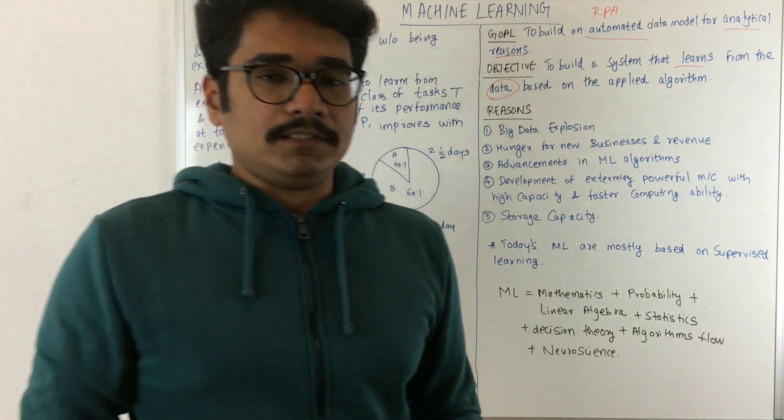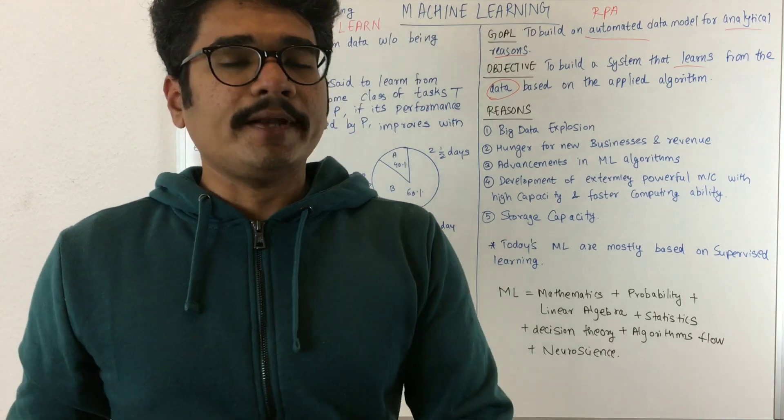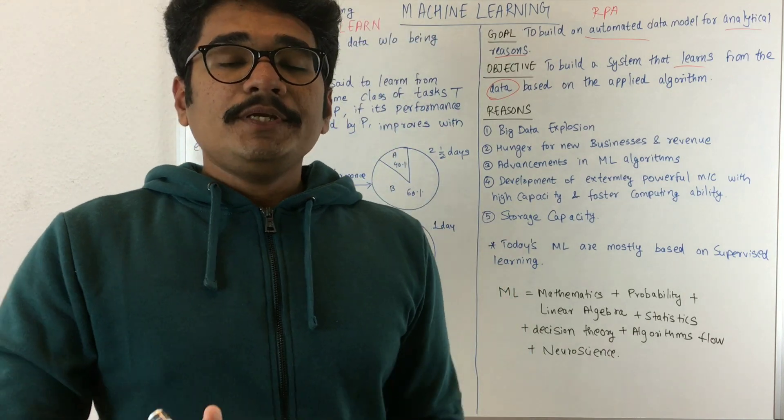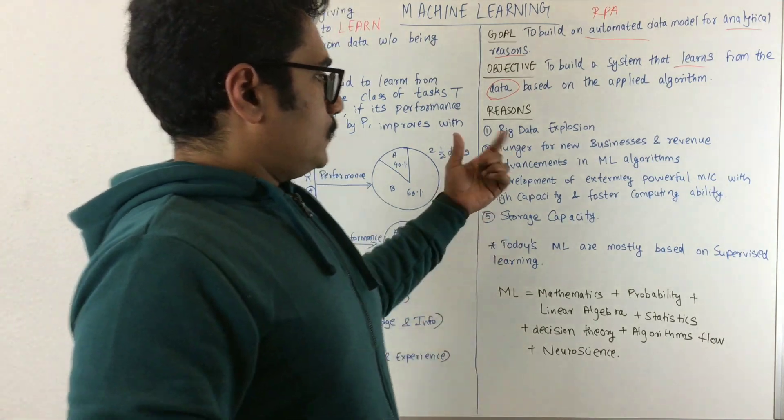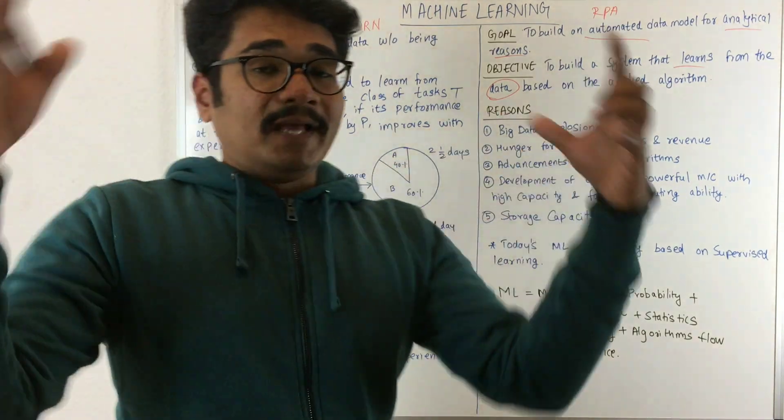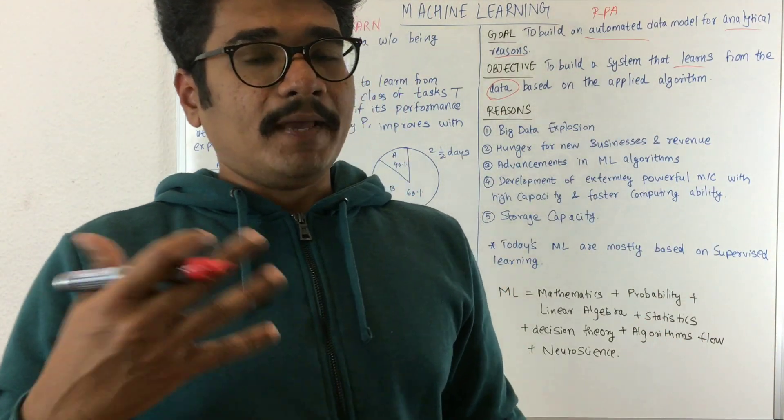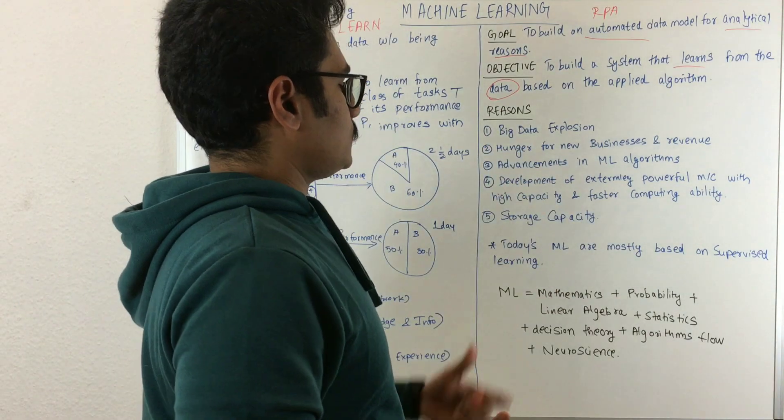Second is the hunger for new businesses and revenue. In the stock market, if you have new trends for extracting data, or if Bitcoin comes into picture, you need to extract or mine those things. There, with massive amounts of data, you need ML algorithms to sample and process results.